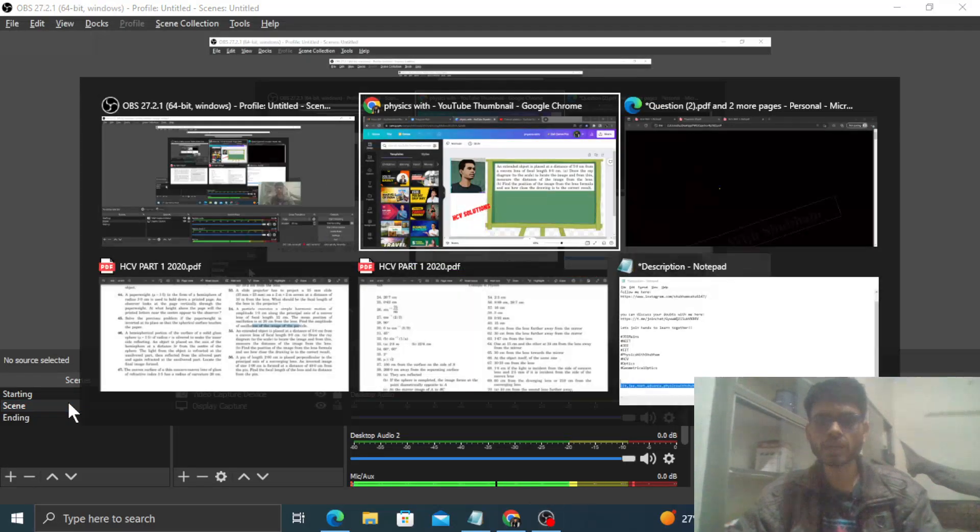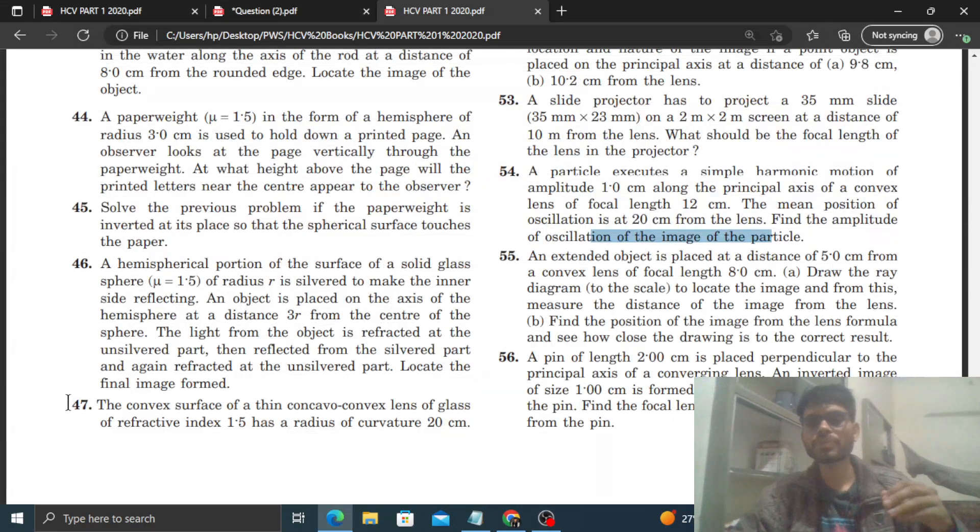Okay, hi everyone. Today I will discuss HCV question number 54. It says a particle executes a simple harmonic motion of amplitude 1 centimeter along the principal axis of a convex lens of focal length 12 centimeter. The mean position of the oscillation is 20 centimeter from the lens. Find the amplitude of oscillation of the image of the particle.